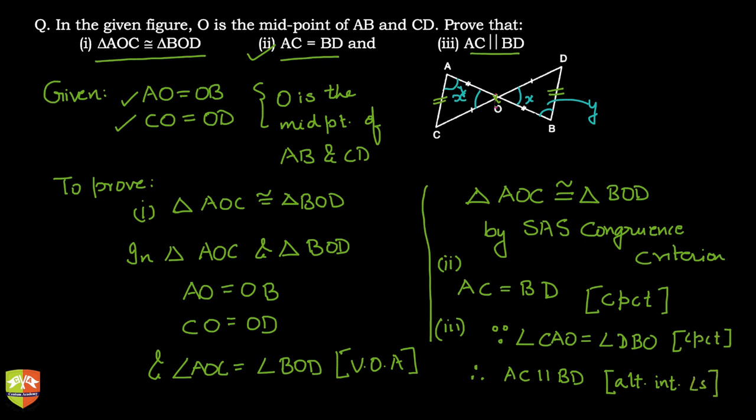Hence all the three parts - this congruence, equality, and parallel - all of that is true. I hope you understood this problem where we applied SAS congruence criterion to prove that two triangles are congruent and their corresponding elements or sub-parts of the triangles are equal due to CPCT.